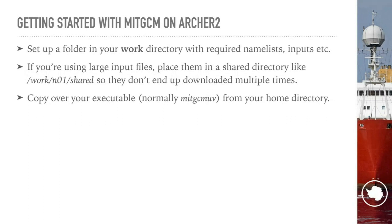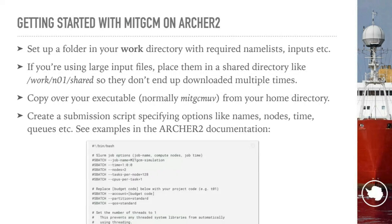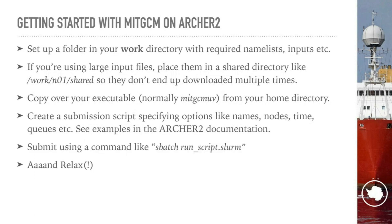Then you copy over your executable from your home directory where you built it — it's normally called MITGCMUV — and you run it using a SLURM script, which gives you all the options like what to call your job, how many nodes you're using, how long it's going to run, and which queue to use (standard or long). There are lots of examples in the Archer 2 documentation. Then you run sbatch and, in theory, relax — though it will probably crash in the first three seconds and you'll need to do some bug fixing.